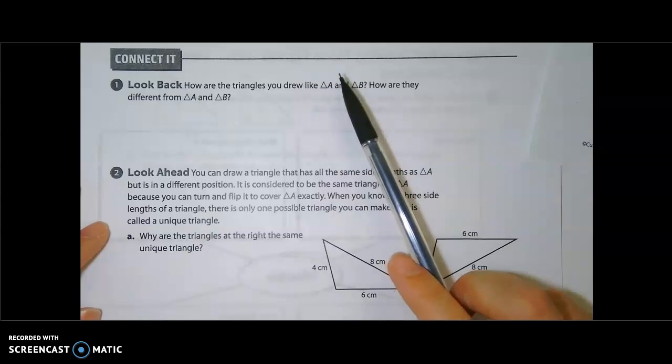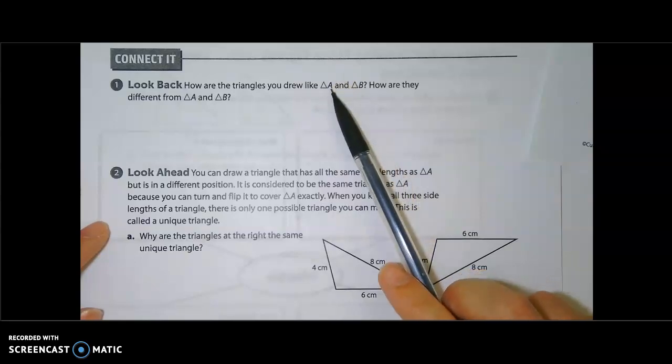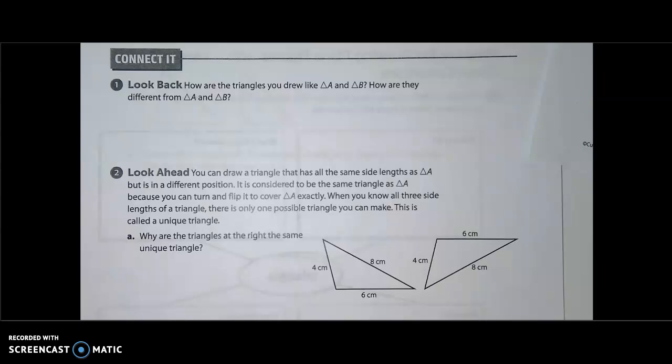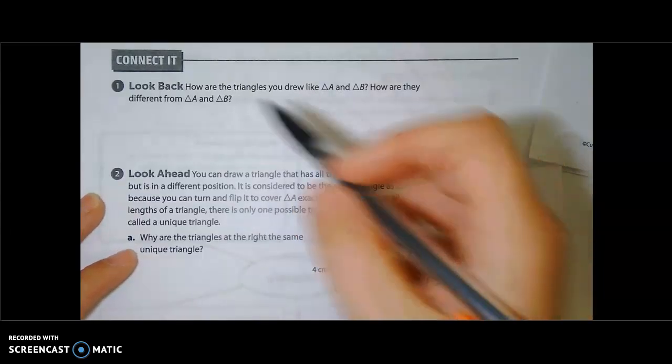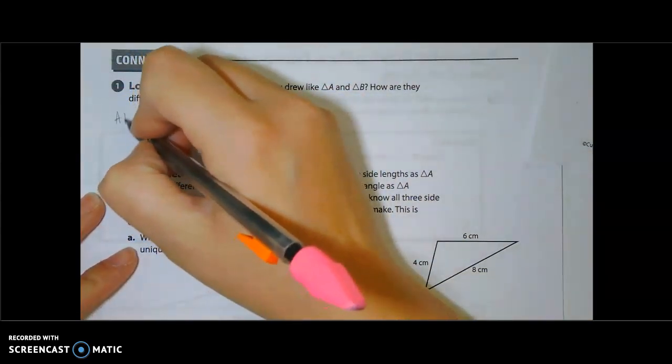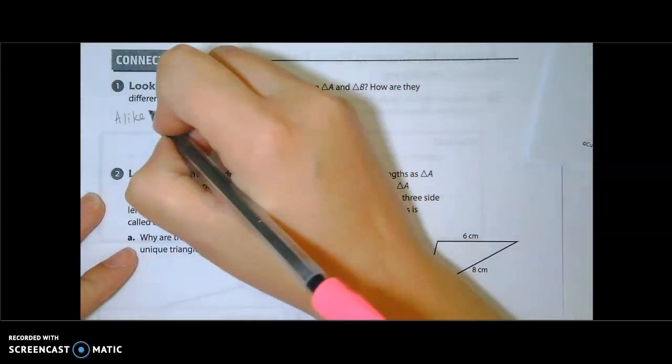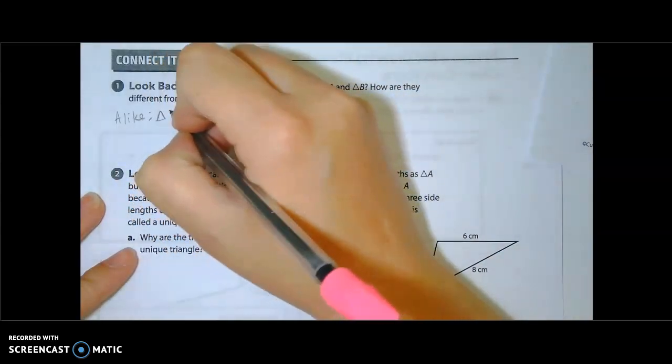we were drawing triangles. In the first triangle we drew, we were supposed to draw the same side lengths as triangle A, and the second one we were supposed to do the same angle measures as triangle B. And so here it is, how are they alike, how are they different? So to talk about the alike,